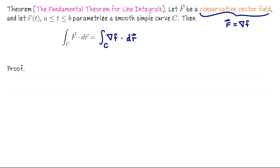So far what I've written down is not a theorem — this is just substitution. So what is the theorem? The theorem is that if I want to compute this line integral, it amounts to computing the value of the potential function at the endpoint minus the potential function evaluated at the beginning point of the curve. That's the theorem.